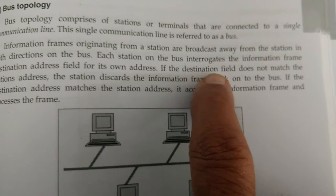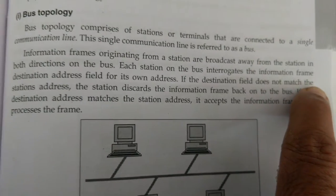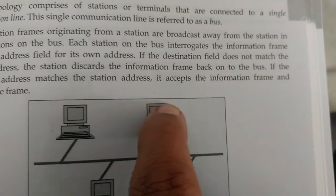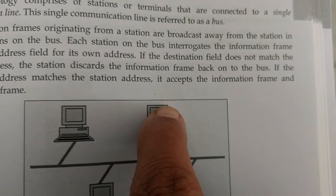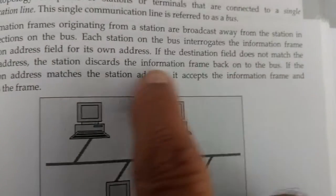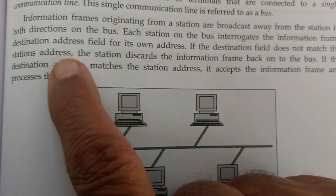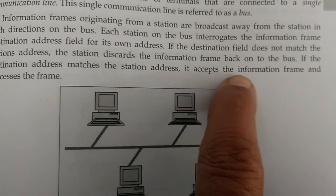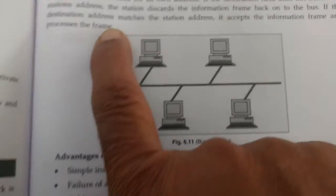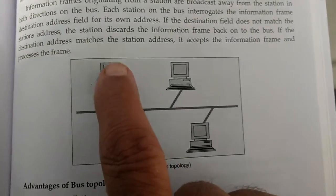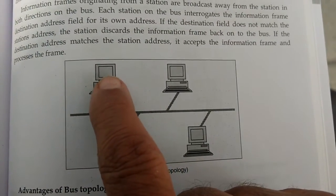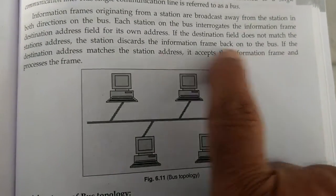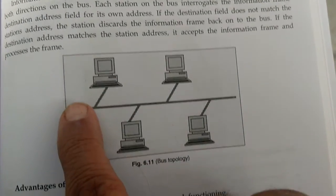Each station on the bus interrogates the information frame's destination address field for its own address. If the destination address does not match the station address, the station discards the information frame. If the destination address matches the station address, it accepts the information frame and processes it.